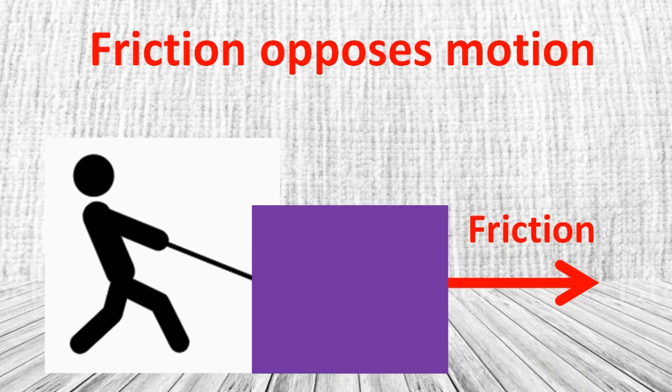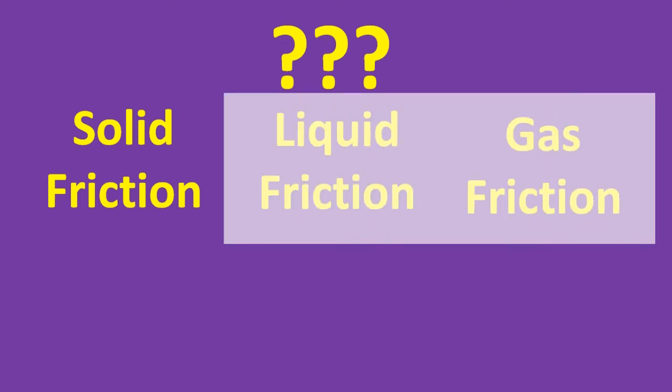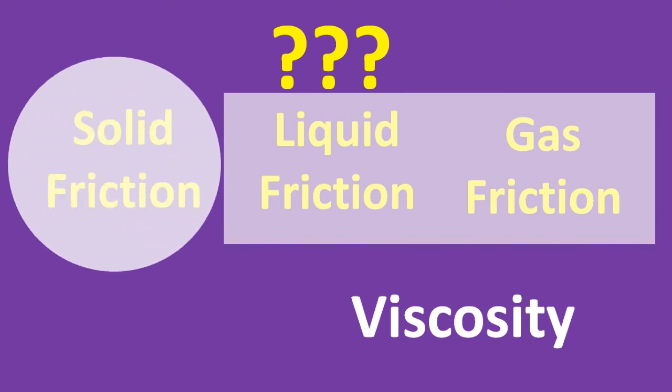Now, does friction only act between solid surfaces? There is also a similar idea as friction for liquids and gases. It is specifically called viscosity. We will learn about it in subsequent classes, but most of the times when we talk of friction, people understand it to be the force between solid surfaces. To be very emphatic, some people usually refer to it as solid friction. I see, so we are learning about solid friction in this class.